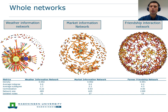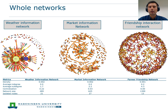Let us now look at some social network graphs. Here you see the three networks at the whole network level, meaning they contain all actors interviewed and all actors cited by the interviewed farmers across the different regions. The color of the nodes shows the role of the actors and the arrow shows the direction of information flow. The size of the nodes indicates the degree — how much information a node is receiving or sending. By eyeballing the graphs, we can already see substantial differences between them. The weather information network, which describes how farmers got information before the project, demonstrates TV clearly as the biggest node, indicating it is the most dominant source of weather information for farmers in the study regions.